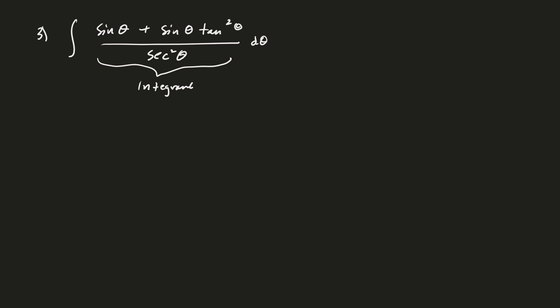We should try to simplify that before we get started. One thing right off the bat, 1 over secant squared is what? Cosine squared, that's right. So we could go ahead and move that. So instead of 1 over secant squared, we'll have cosine squared. Then we'll have sine of theta plus sine of theta. And then tangent squared is sine squared over cosine squared.